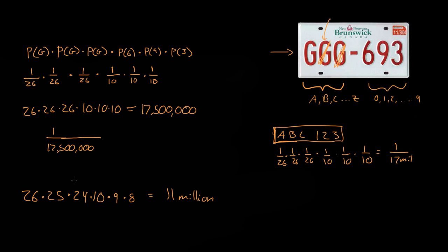So once you're unable to repeat letters, you lose around 6 million plates. If you're in a big state like California, 11 million plates is kind of pushing it. So you want to have as many plates as possible, which is why you'll allow the letters to repeat.